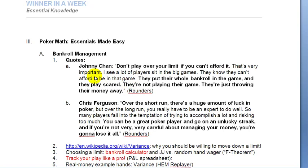We've seen quotes from two very good players, Johnny Chan and Chris Ferguson. We've understood variance, why you need to be willing to move down a limit, why you should adhere to bankroll management as we just looked at in two of our calculators. We've looked at the gambler example to illustrate why you should definitely, as a semi-professional player, segment your bankroll. We looked at the F-theorem — basically never get clouded by hope or fear to the point that you forget common sense.